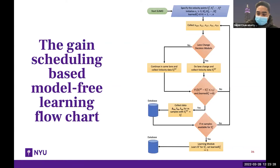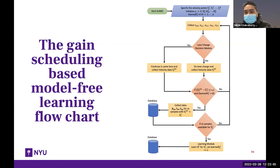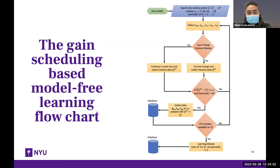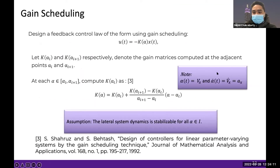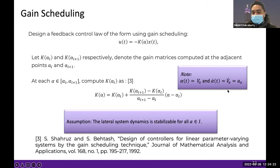For gain scheduling, the controllers obtained at every operating point are stabilizing, and for us they are also optimal — so that condition is already satisfied. Another condition is that when we obtain the unified controller, stability is guaranteed for the overall system. Gain scheduling theory requires that the variation of parameter alpha should be small enough. The variation of VX is simply the longitudinal acceleration. Since we can design a controller for longitudinal acceleration, we can maintain a low acceleration profile so that the unified controller stabilizes the overall system.